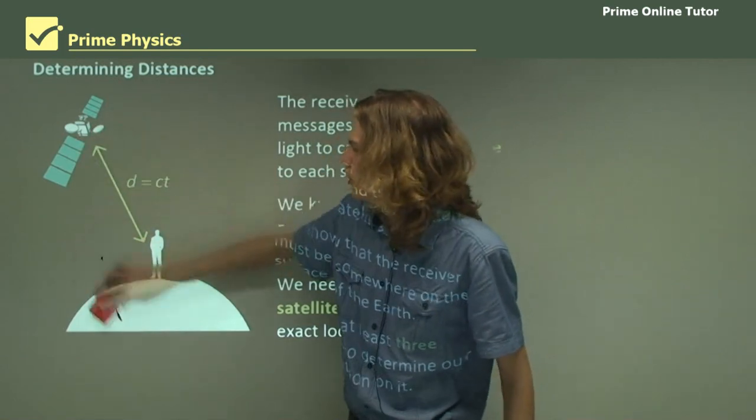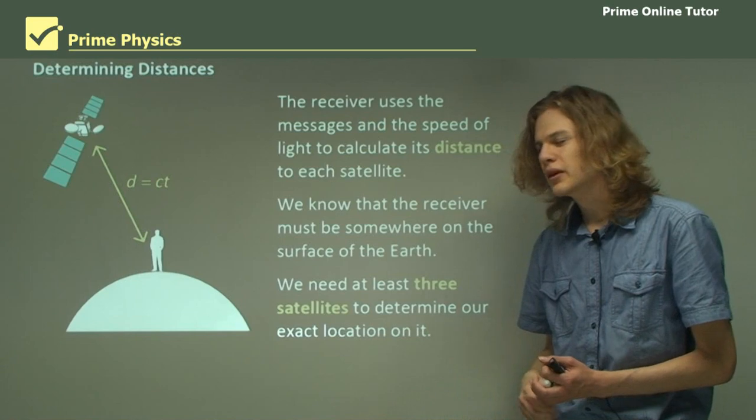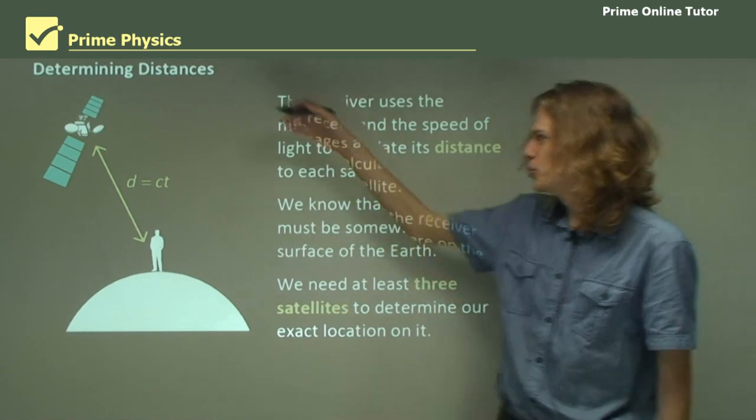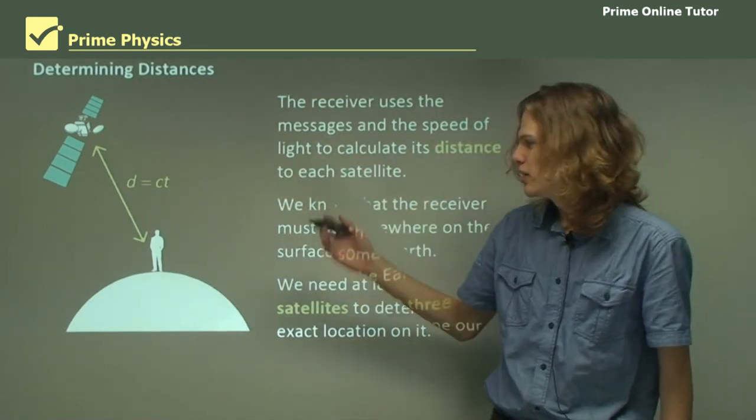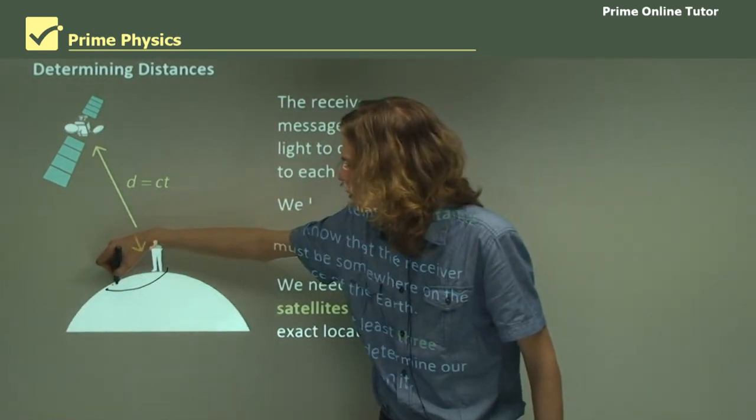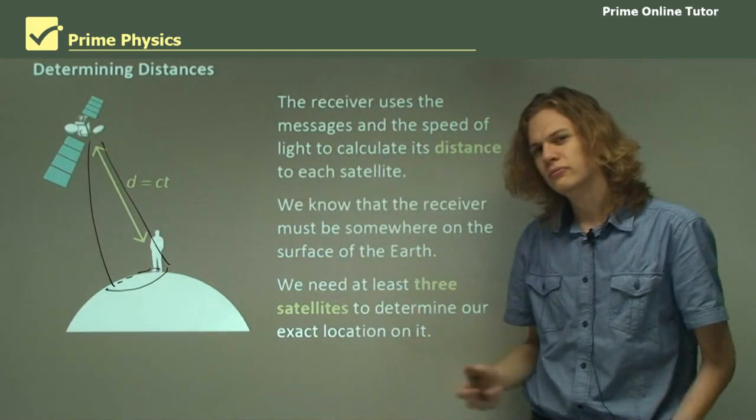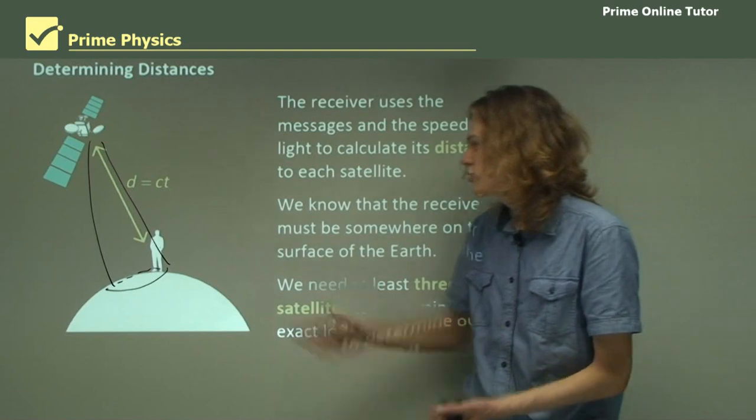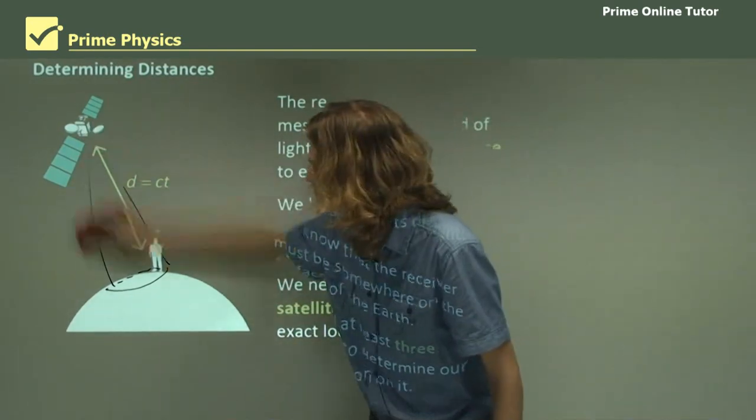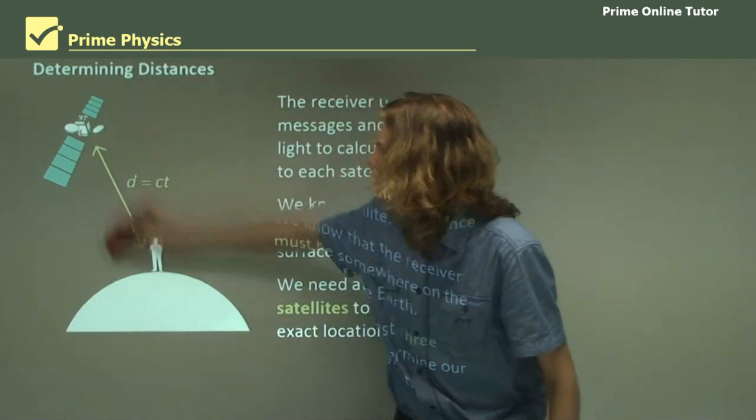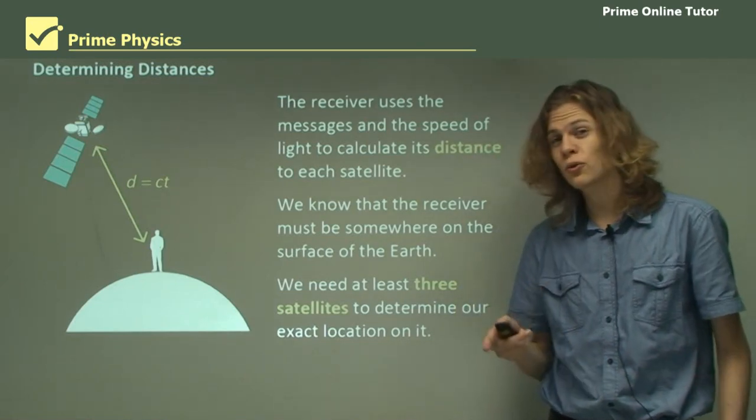In fact, if we have the signal for only one satellite, then if we know exactly where the satellite is and exactly our distance from it, then our location could be anywhere on a little circle on the surface of the Earth. All the points on the circle will be exactly the same distance from the satellite. But we don't have only one satellite. We have lots, 24 in fact.